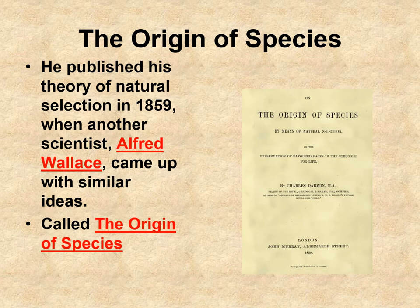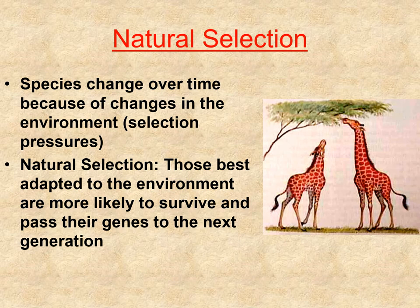Darwin then decided to publish the Origin of Species, based on his theory of natural selection, written in 1859. While studying his ideas, he worked with Alfred Wallace, who actually came up with similar ideas. But Darwin finished his book quickly so he could get it published first and receive the credit.